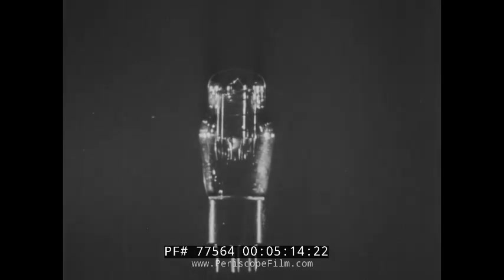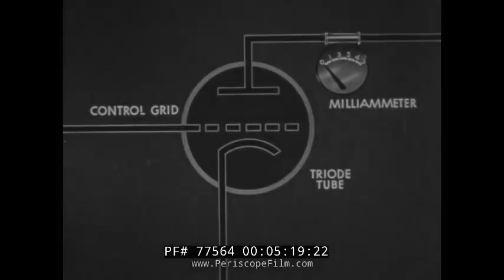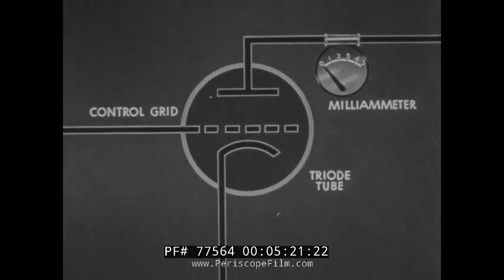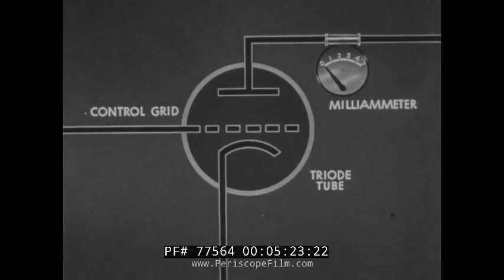The controlling action of a radio tube results in the tube often being referred to as a valve. This hookup shows grid voltage change in relation to plate voltage change.